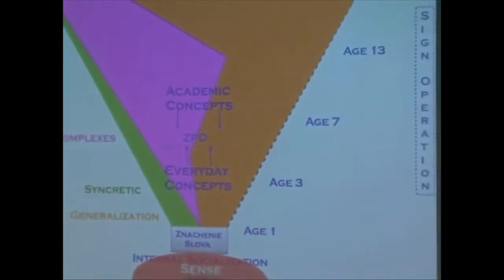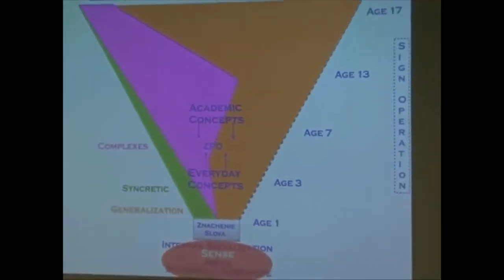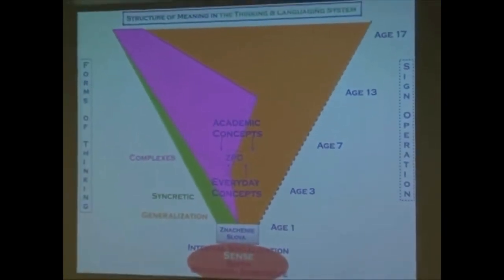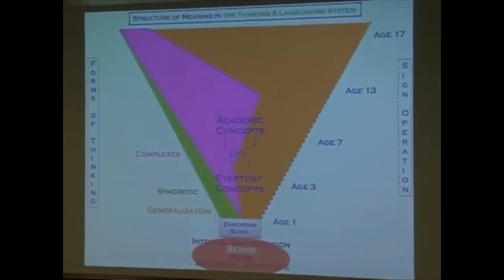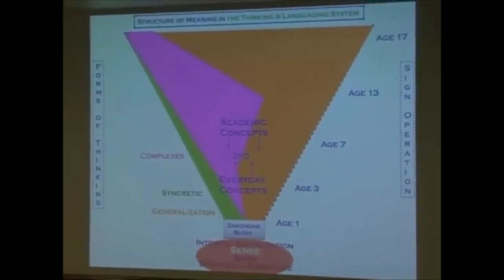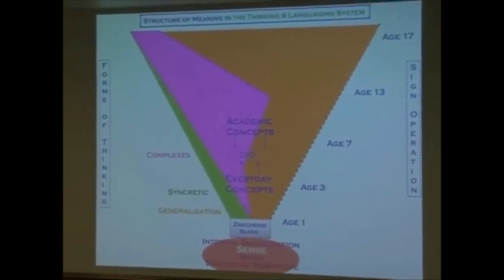He then says that this link between the two is the zone of proximal development — and this is a very different reading than the one we tend to get.